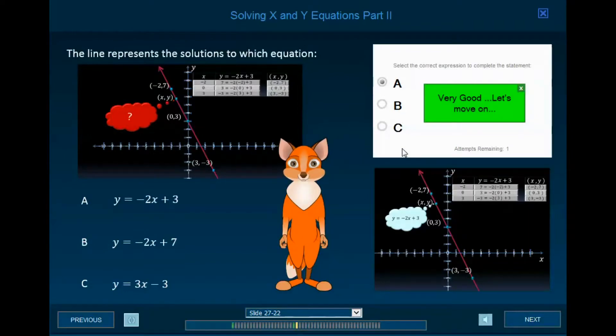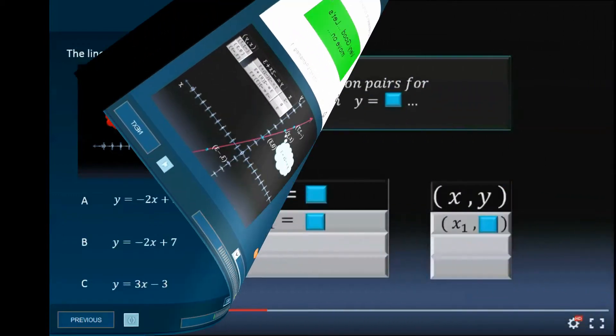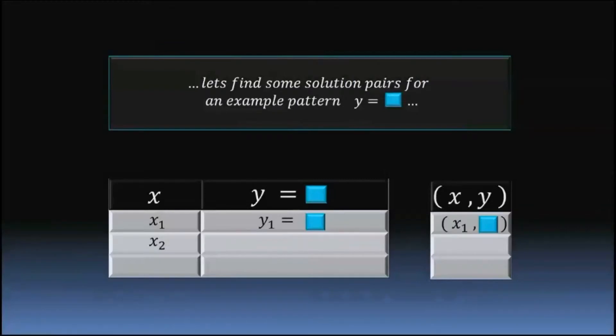Very nice. The line represents the solutions to the equation y equals negative 2x plus 3. If at a different point in time x should have the value x sub 2, the y that is related to that x value at that point in time is the number value from our equation.